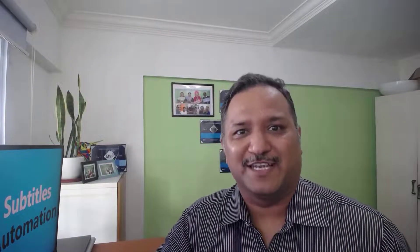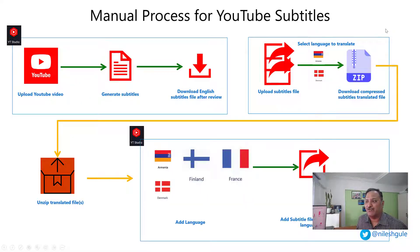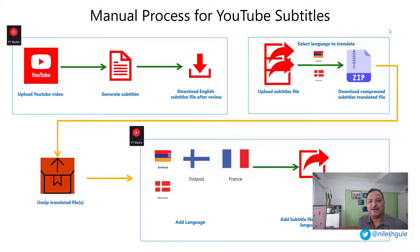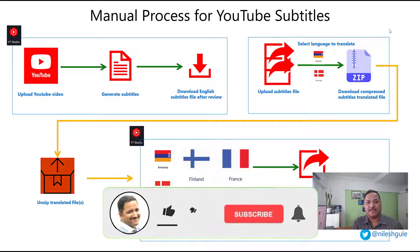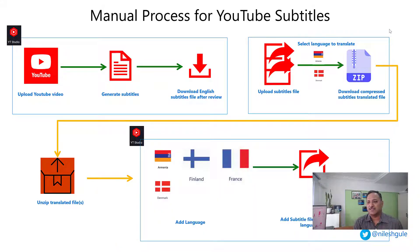Hello, friends. My name is Nilesh. In this video we are going to see how to automate the subtitles for YouTube. In the previous video, which was Part 1, we looked at the different things required for uploading video subtitles to YouTube. We started with understanding the manual process where we generate subtitles in the native language — English in my case — download the subtitles file, then use an online subtitles translator for every language, upload the file, download the zip, and go into YouTube Studio.